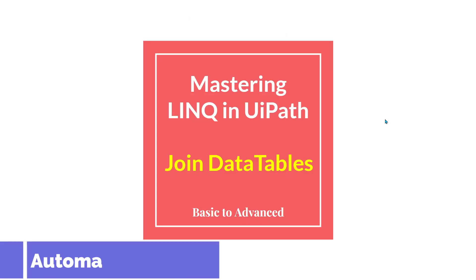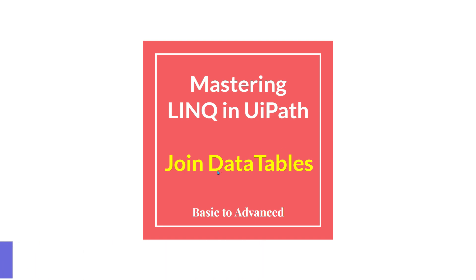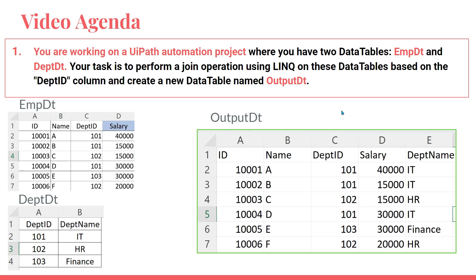Dear friends, welcome back to Automate with Rakesh. In this video we are going to learn about Join Data Tables. Let me show you one of the questions we will try to solve. You are working on a UiPath automation project where you have two data tables: one is employee_dt and the other one is department_dt. Let's have a close look at the employee_dt.